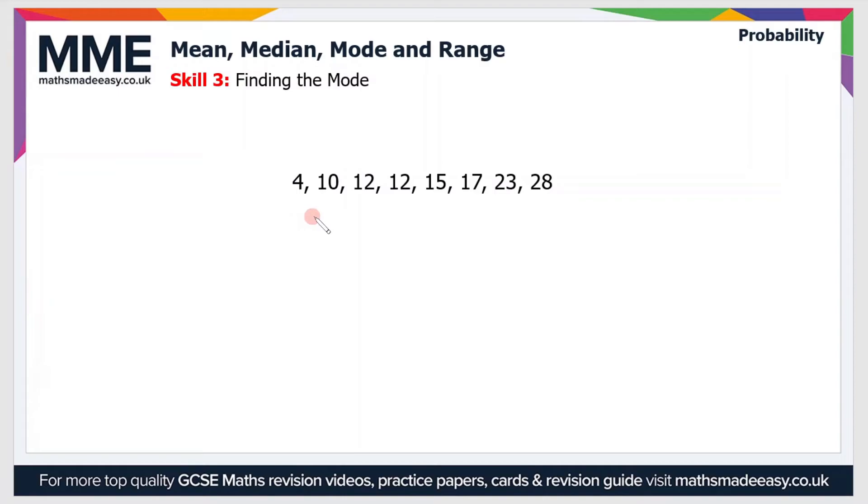So the third skill that we'll see is finding the mode. And this is probably the easiest value to calculate because you don't really have to do any calculation at all. All you have to do is find the most commonly occurring value. So in this case, there's one value that appears twice, and that is 12, as you can see there. So therefore, the mode is 12.